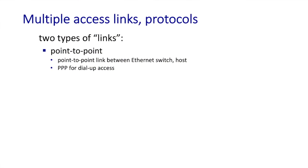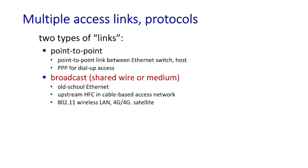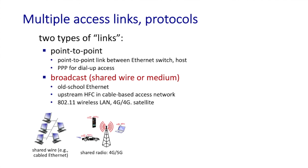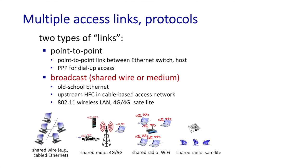Let's begin our discussion of multiple access links and protocols by talking about links in the link layer. There are basically two types of links: point-to-point links that operate between a single sender and a single receiver, and broadcast links, where there are multiple senders and multiple receivers. We're going to encounter broadcast links in a lot of different scenarios: a shared wire like cable Ethernet, the original Ethernet, shared radio like 4G, 5G, LTE systems, 802.11 Wi-Fi networks, and shared radio in satellite networks.